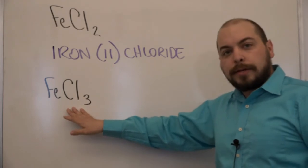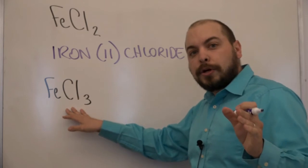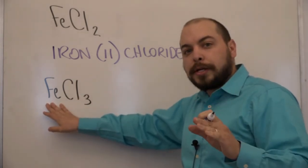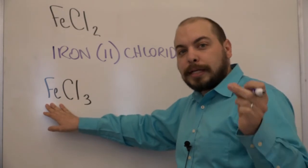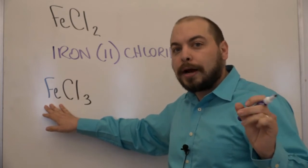Whereas for the second compound iron chloride here because each chlorine still has a charge of negative one the iron must have a charge of plus three. So we're going to do the exact same thing except the Roman numeral will now suggest that we have or show that we have a plus three charge on that iron.